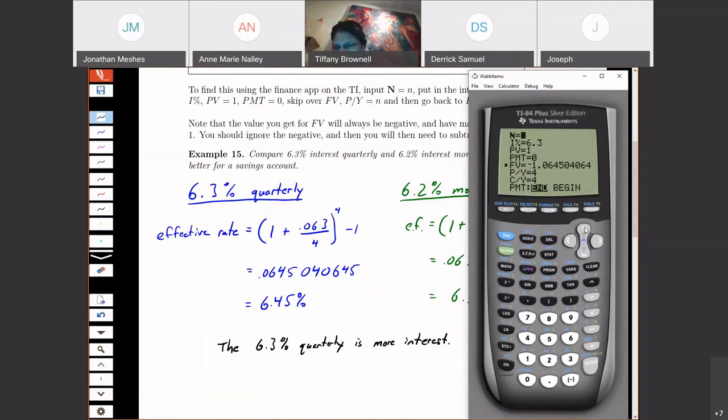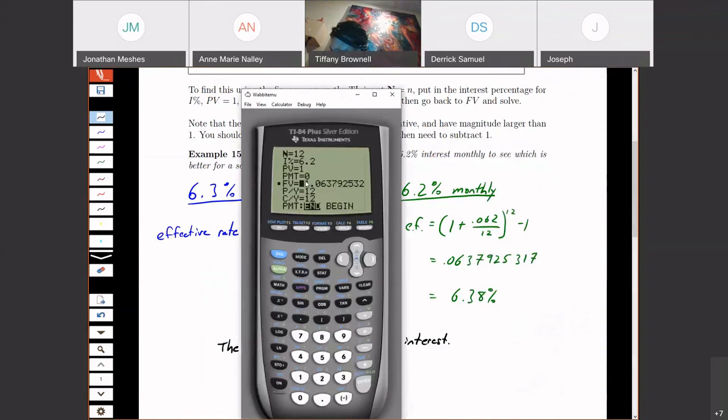And if I look at monthly, we say okay, this is going to be a 12. It was 6.2, and I change this one to a 12. And now here I can see if I ignore the one, I have my 0.06379.